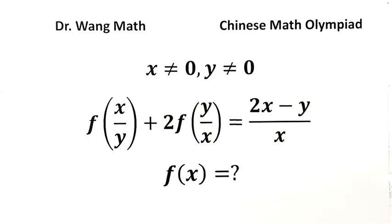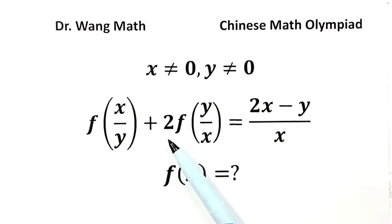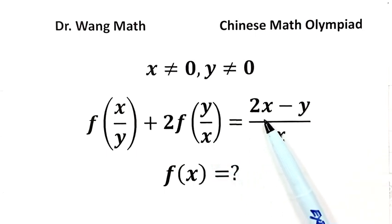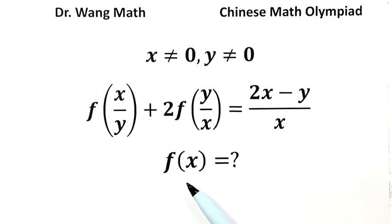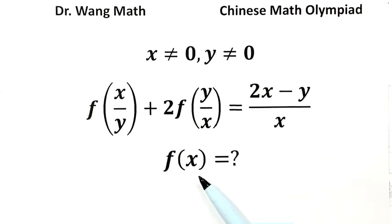In this video, we can solve a question from the Chinese Math Olympiad. Given function f of x over y plus 2 times f of y over x equals 2x minus y over x, then solve the equation for f of x. So now let's see how to solve it.